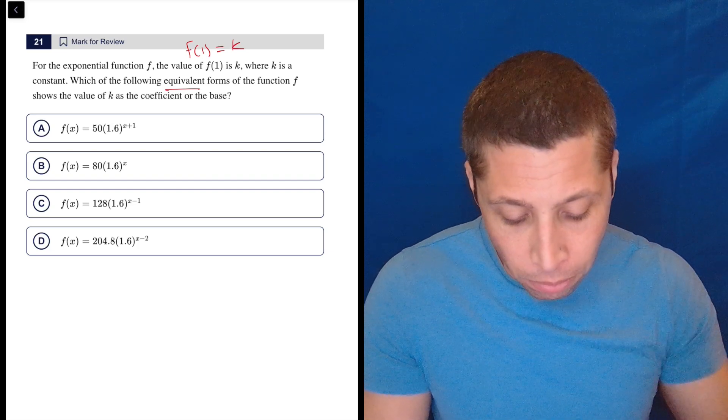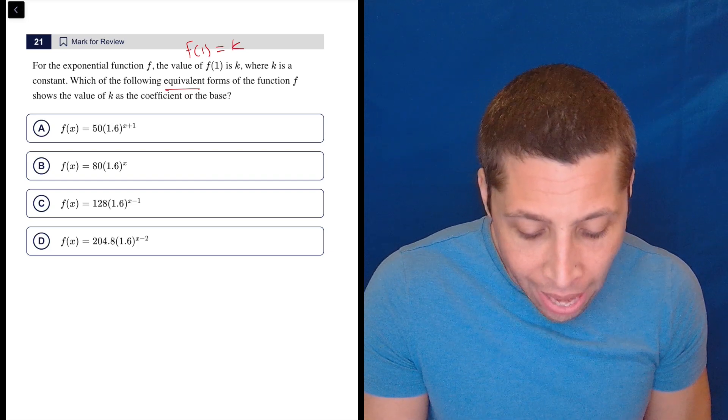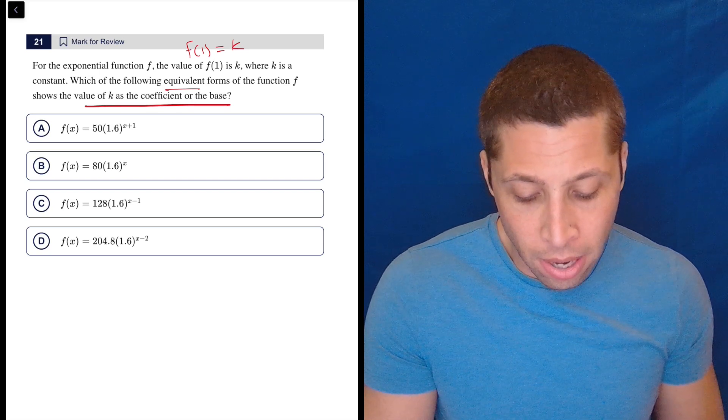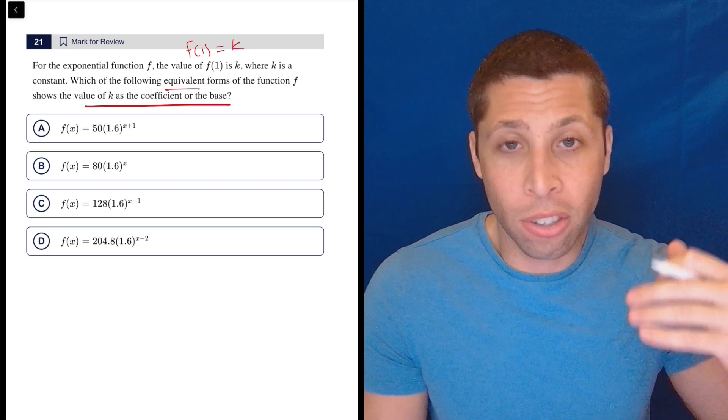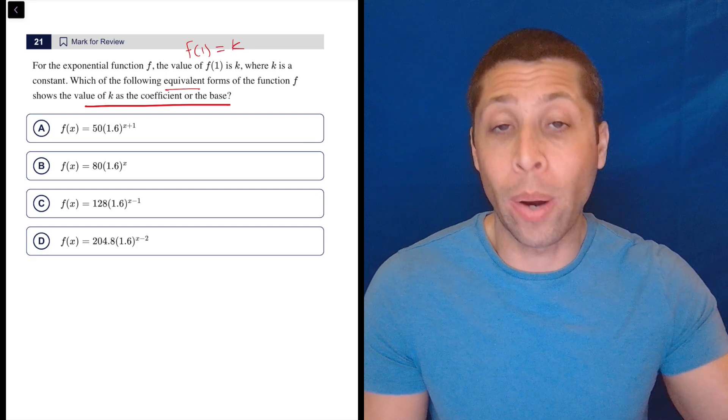So which of the following equivalent forms of the function f shows the value of k as the coefficient or the base? Coefficient, constant, base, these are just code words for number in the equation.